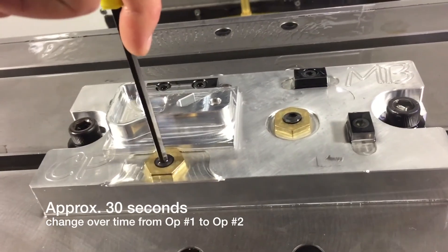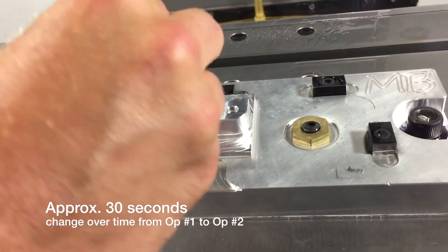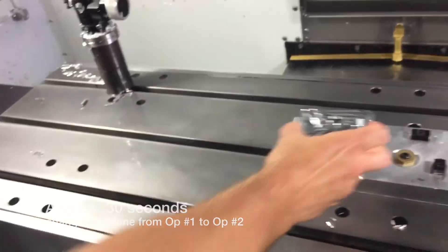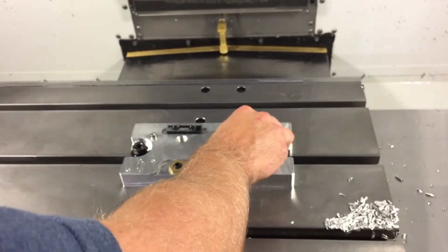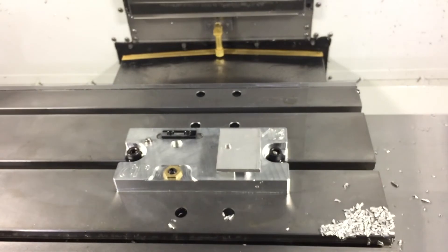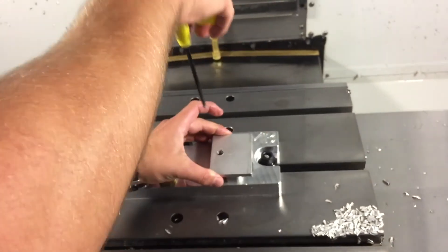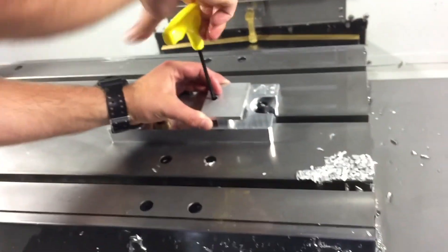Removing the part from Op1 is as simple as loosening the MightyByte clamp and popping the part out. The part is then loaded in the Op2 fixture configuration. Note how the access hole is used in order to get the tool onto the MightyByte clamp.